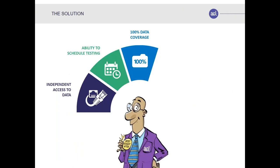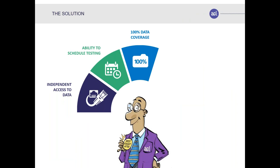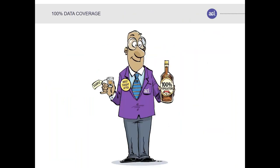The third component is working with 100% of the data. The old way — still pushed by many consulting firms — is to work with samples. Once you have the right technology, the concept of sampling is dead. The only sampling that might occur is when there are so many exceptions that you sample them to create a manageable workload. Now that you can test 100% of the population 100% of the time, you can achieve full data coverage.